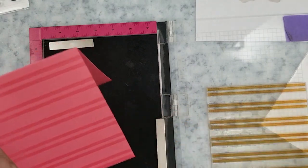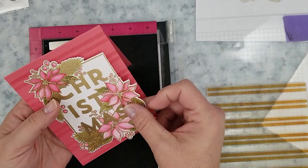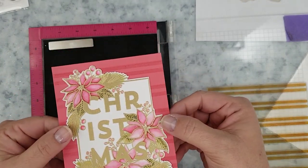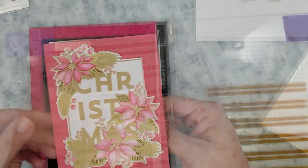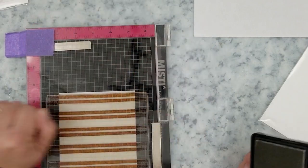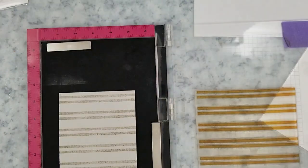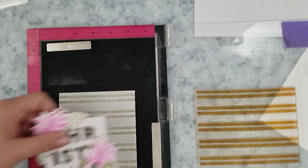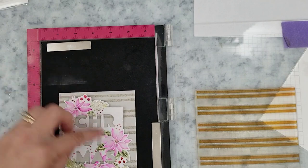I'm going to add some interest to the card bases before adding those watercolored panels. So I stamp Concord and 9th's woven stripe pattern using my WOW embossing pad on that Think Pink card stock, and I'm going to use the Simon Says Fog ink on the fog card stock.